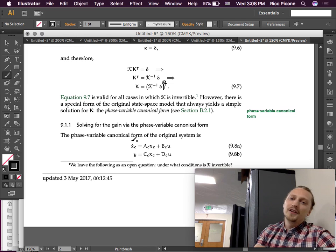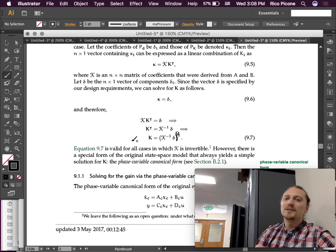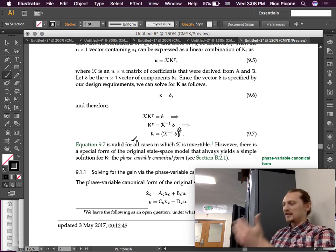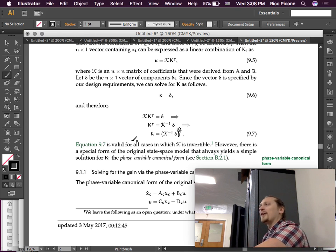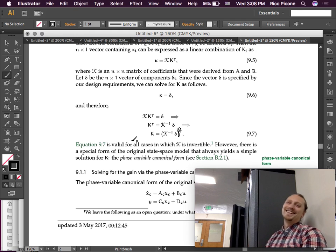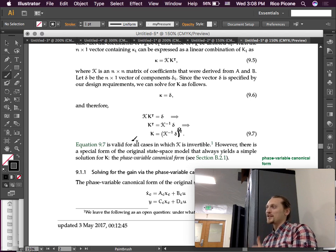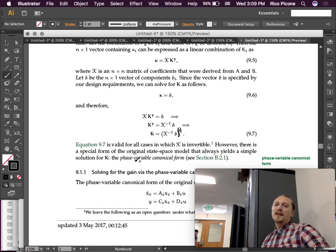Equation 9.7 is valid for all cases in which script K is invertible. We leave the following as an open question: Under what conditions is K invertible? This is fun. This is a preview of the type of shit that you have to put up with in graduate school, where they leave it as an exercise for you to think this out. So, anyways, 9.7 works as long as you can invert K.